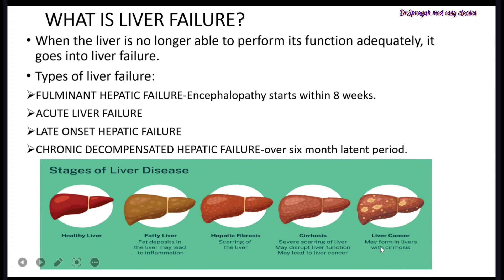The stages of liver disease begin with a healthy liver, then progress to fatty liver in which fat is deposited and can lead to inflammation. Third is hepatic fibrosis, in which scarring of the liver can be seen. This gradually progresses to cirrhosis, with severe scarring and disruption of liver function. The final stage is liver cancer, which may form in a liver with cirrhosis.